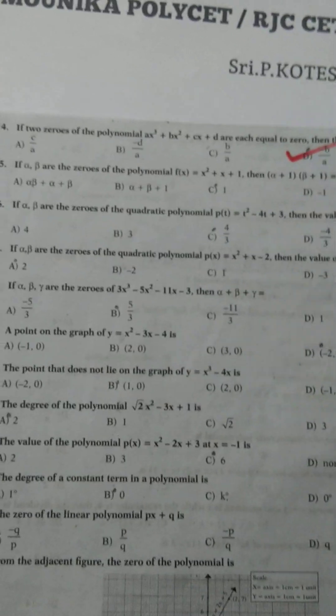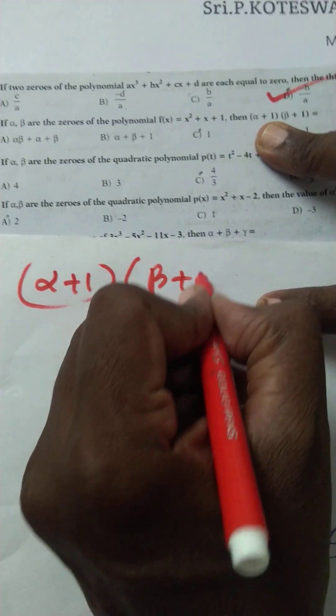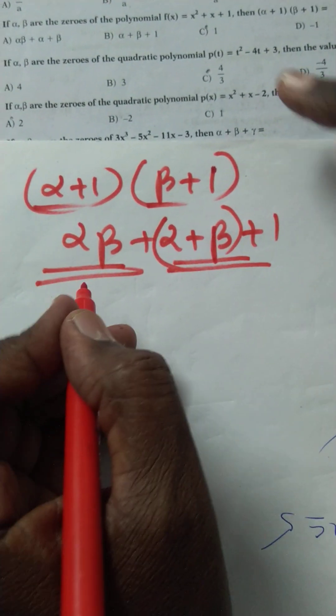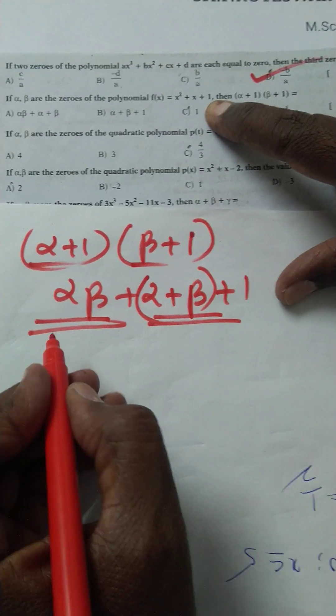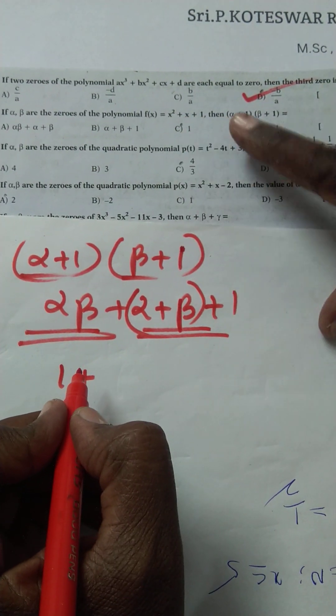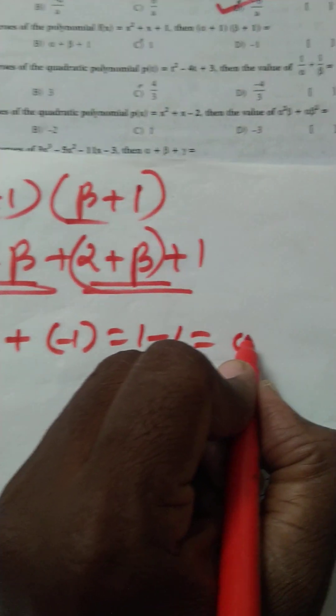Look here — alpha plus 1 into beta plus 1. You multiply in your mind: alpha·beta + alpha + beta + 1. This gives the sum of the zeros and the product of the zeros. Product of the zeros means 1 by 1, that is 1. Sum of the roots: alpha plus beta = minus 1 by 1, so minus 1 plus 1 is equal to 0.